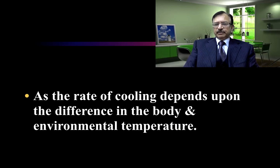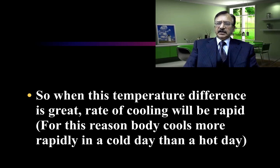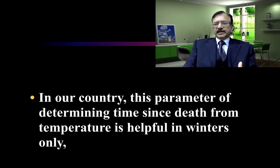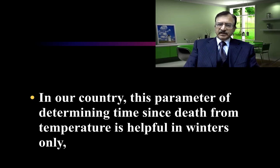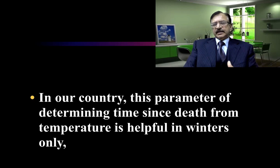Environmental temperature also plays an important role. The rate of cooling depends upon the difference between the body temperature and the environmental temperature. When this difference is higher, the rate of heat loss will be rapid. But if the environmental temperature is high, the difference will be less and heat loss will be slower. In our country, this parameter for estimating time since death is not helpful in summers — only in winters — because in summer, temperatures rise to 45–50°C and instead of cooling, the body can actually gain heat from the environment.